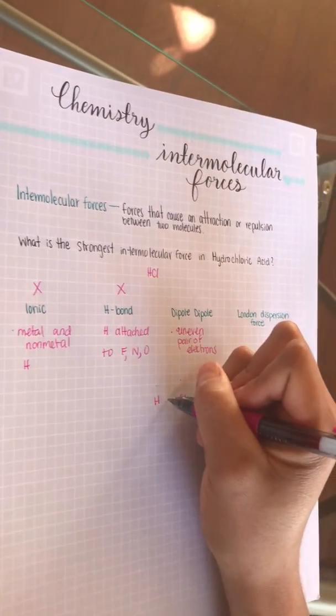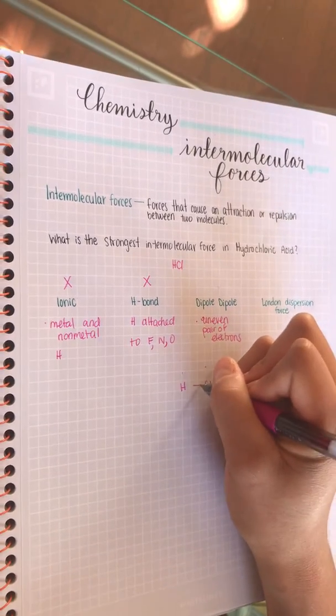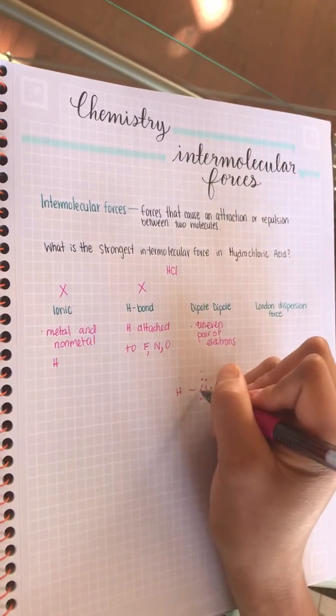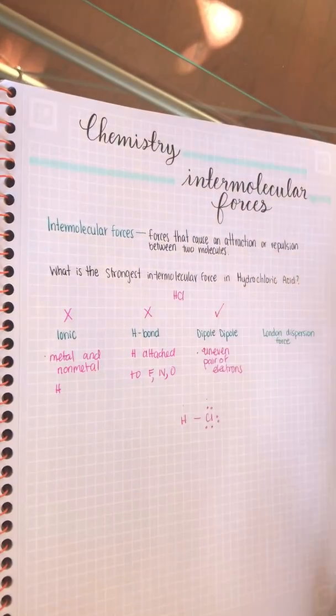Hydrogen has one electron and then chlorine has seven, so it will be one, two, three, four, five, six, seven. They're sharing this one, so we have a dipole-dipole.